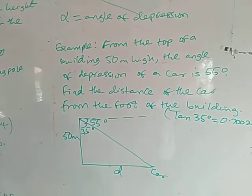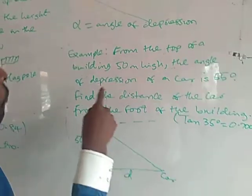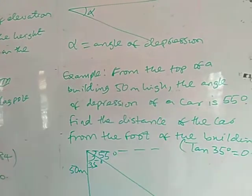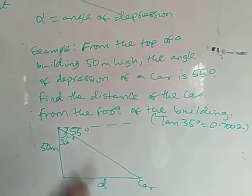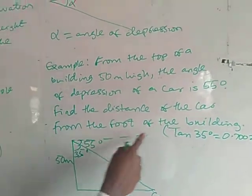So how do we do that? Here's an example to solve the angle of depression. From the top of a building 50 meters high, the angle of depression of a car is 55 degrees. The car is below. Find the distance of the car from the foot of the building.